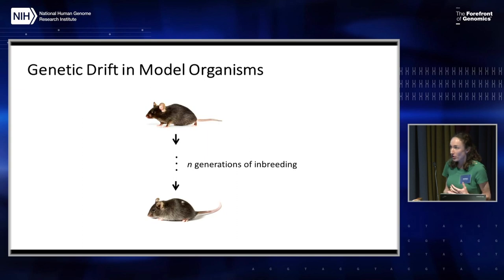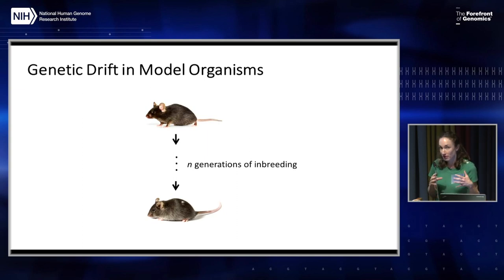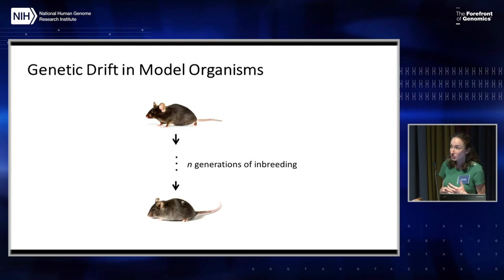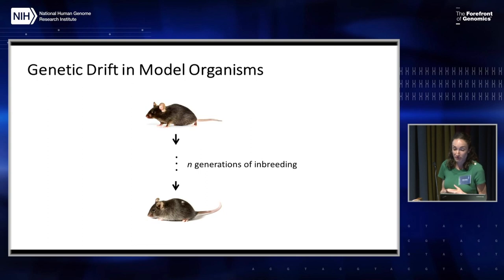A point that is maybe a little peripheral to the focus of this workshop, but still very important, is that mutation also leads to genetic drift in our inbred animal models, which has a really profound impact on the reproducibility of research.